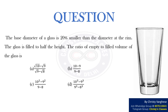a) (√10 − √9) / (√9 − √8), b) (10 − 9) / (9 − 8), c) (10² − 9²) / (9 − 8), or d) (10³ − 9³) / (9³ − 8³).